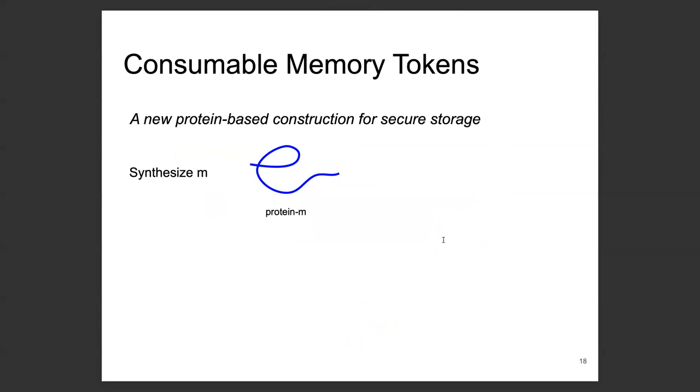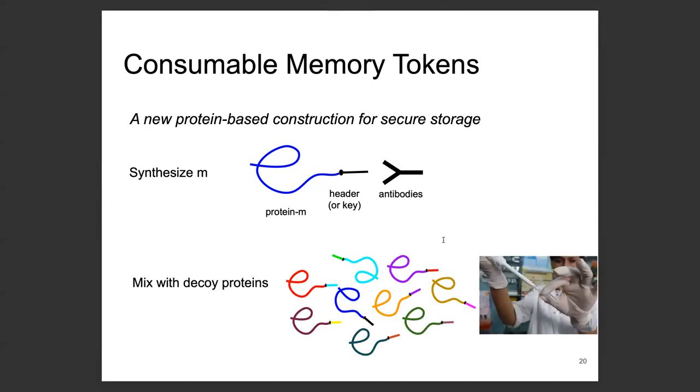Based on these observations, we propose a novel construction for consumable storage tokens. At a high level, we take a digital message and transform it into a protein. Then we connect the target protein with another short protein sequence called header, such that this header can be recognized by matching antibodies. So knowing the header description, which can be digital information, allows identifying the matching antibodies. This header, to us, represents the secret key tied to our secret message. After that, we mix the target protein with a massive set of random decoy proteins that are attached to different random keys. So the vial containing the mix, where here in the photo our co-author Anna is holding one, is the consumable token.